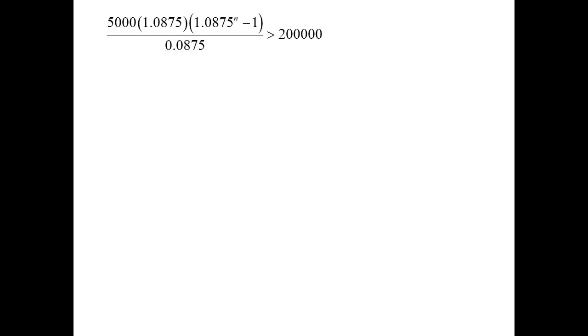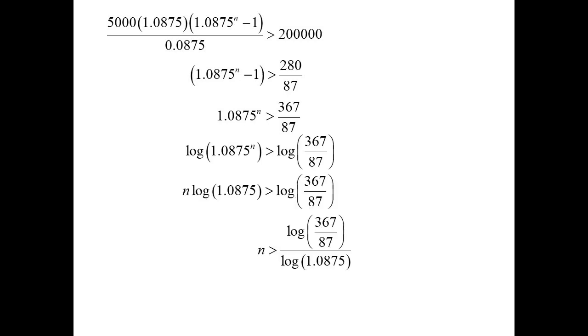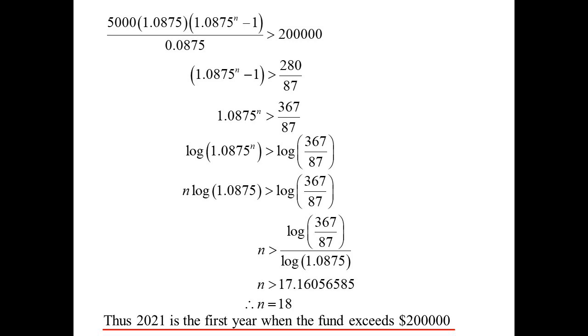We want to know when is that sum to N greater than $200,000. Okay. Using our formula, it's an interesting little inequality to solve, but let's do it. We want to make N the subject. So if I get rid of all those, so I'll multiply over. I now have 1.0875 to the power of N minus 1 is greater than 280 on 87. Move the 1 over. Now I'm going to need to use my log laws. Bring the N out the front. Divide by the log of 1.0875. Put that into our calculator. So N is greater than 17.1. We're looking for whole numbers here. So N equals 18 would be the first one bigger than 17.1. So 2021 would be the first time the fund exceeds $200,000.